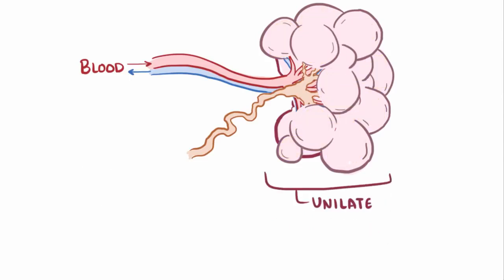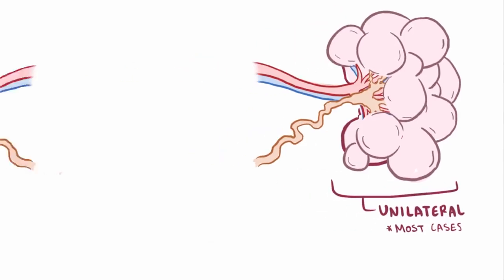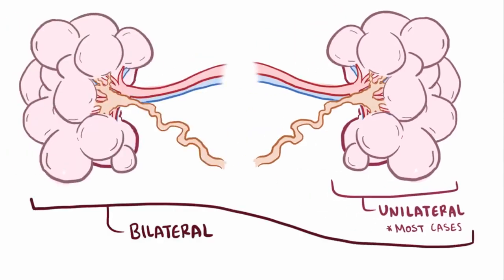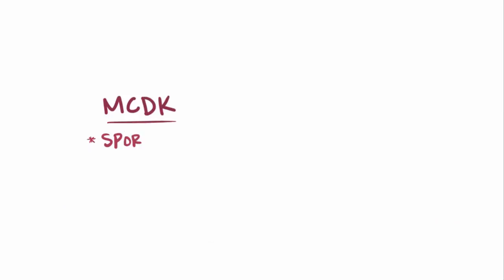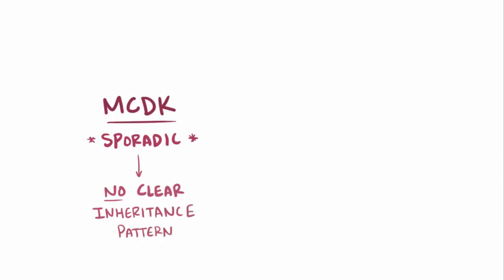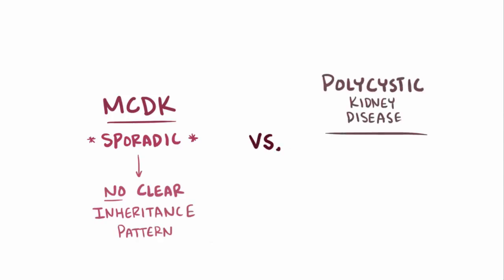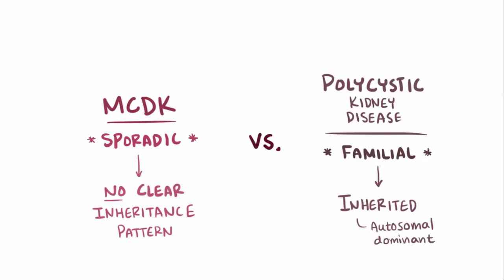Most cases are actually unilateral, meaning they affect only one kidney, although sometimes it might be bilateral, where both are affected. MCDK is usually a sporadic condition that happens during development and does not follow a clear inheritance pattern, which is an important distinction from polycystic kidney disease, a similar cystic kidney disease that's familial, meaning inherited, and typically passed through autosomal dominant inheritance.